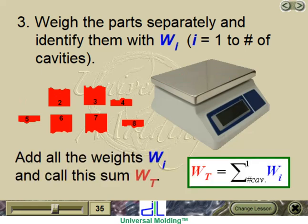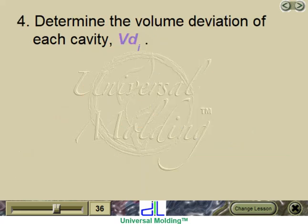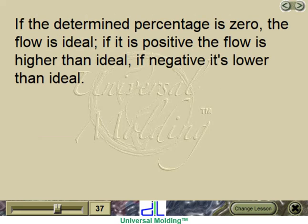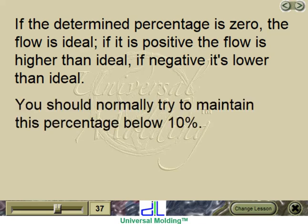Step 4: Determine the volume deviation of each cavity, VD-sub-I. Volume deviation equals (W-sub-I divided by the average weight of all cavities, minus 1) multiplied by 100, where I equals 1 to the number of cavities. If the determined percentage is zero, the flow is ideal. If positive, the flow is higher than ideal. If negative, it is lower than ideal. You should normally try to maintain this percentage below 10%.